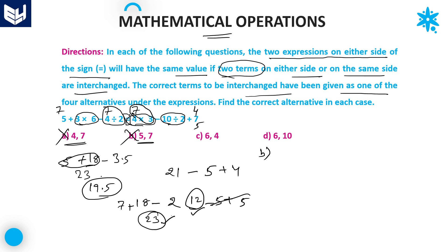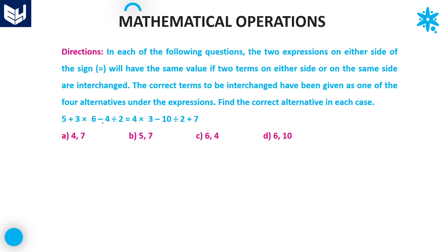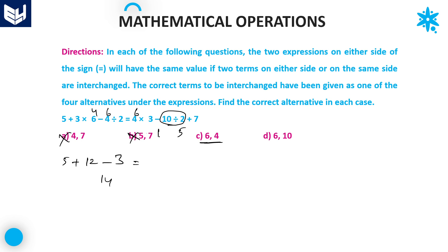Next, option C: if you change 6 and 4, this becomes 4 and 6 on the left side. First priority: 6 divided by 2 equals 3. Then 3 into 4 is 12. So 5 plus 12 minus 3 gives 14 — left hand side is 14. For the right hand side, first priority gives 5, then multiplication: 6 into 3 is 18. 18 minus 5 plus 7 — this gives 20. 14 is not equal to 20, so option C is also eliminated.